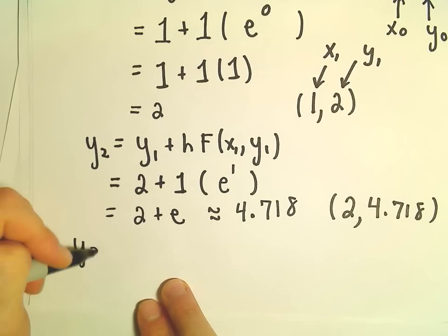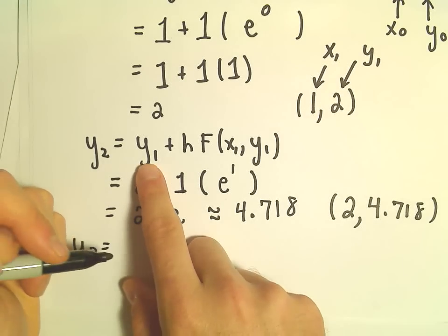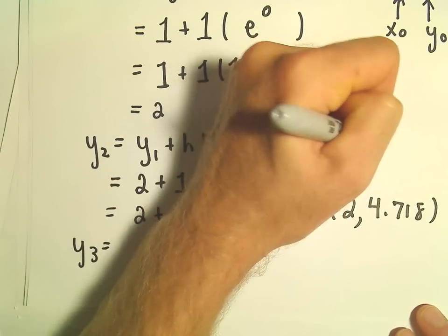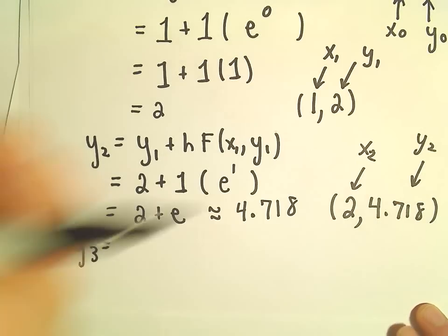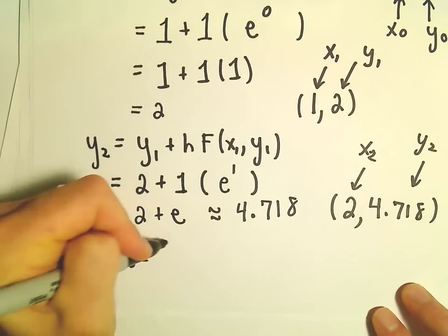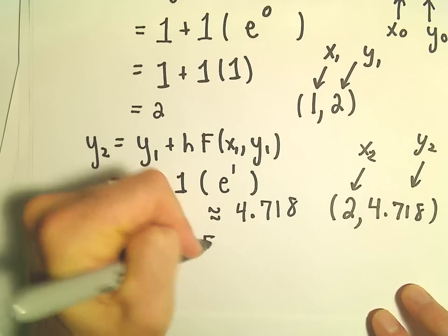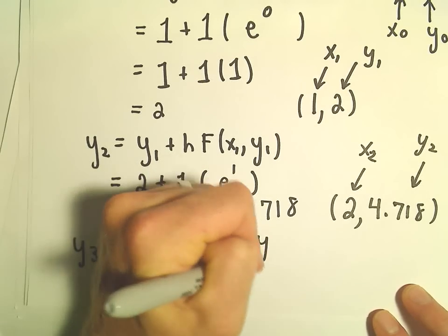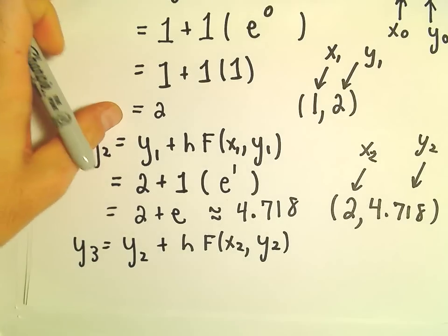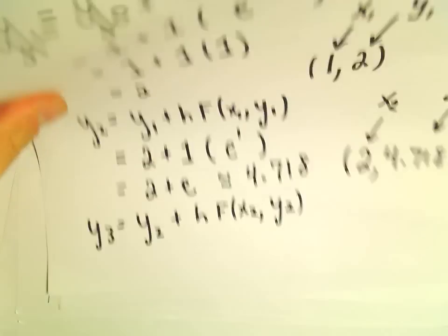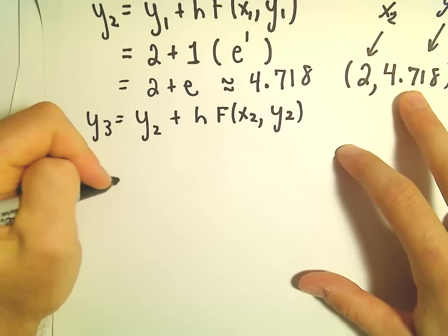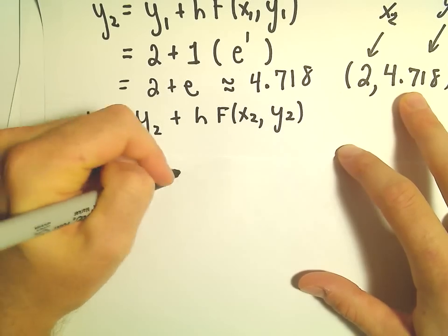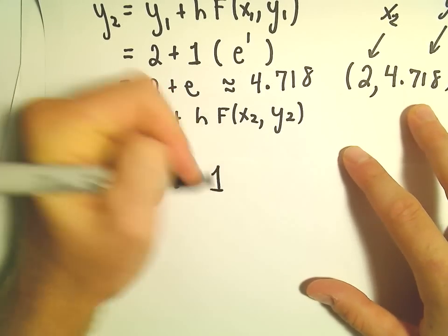And now if we do this one more time, it says we'll take y₂—so again, this is x₂, y₂—we'll take y₂ plus the step size times f(x₂, y₂). So I'm going to plug everything in here. Again, y₂ is 4.718, the step size is 1.